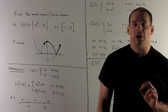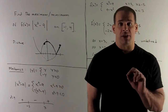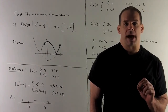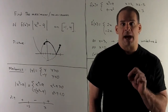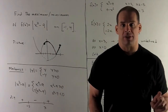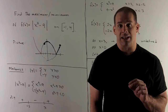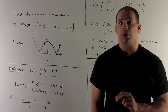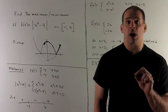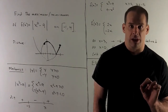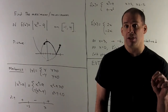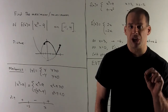Applying that to our function, absolute value of (x² - 9) equals x² - 9 when x² - 9 ≥ 0, and equals -(x² - 9) when x² - 9 < 0. To determine the regions, we find where x² - 9 = 0, which is at x = 3 and x = -3.